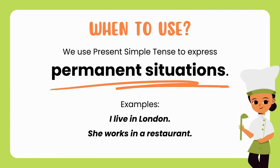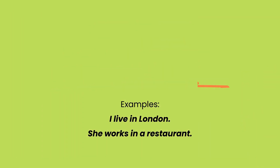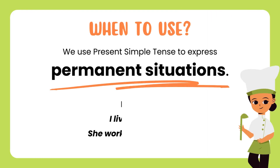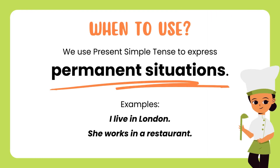When to use? We use Simple Present Tense to express a permanent situation. Example: I live in London. She works in a restaurant.